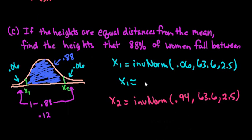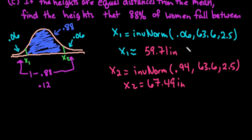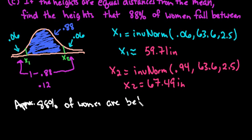So for the first one, our height would be 59.71 inches. And for X2, we end up with 67.49 inches. So 88, the way that we could interpret this, we could say that 88% of women, and we should put approximately, because this is always approximately, 88% of women are between 59.71 inches and 67.49 inches. As always, thanks for watching. If you have any questions, please let me know.